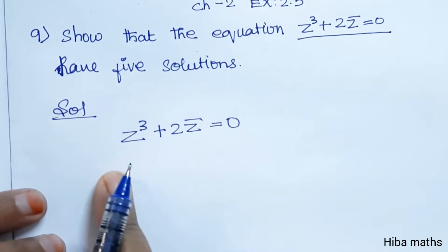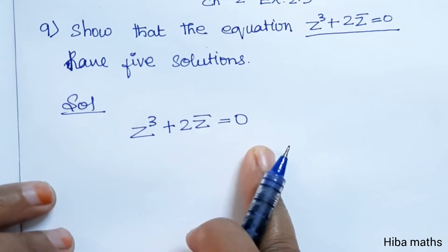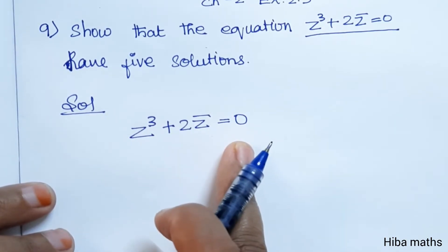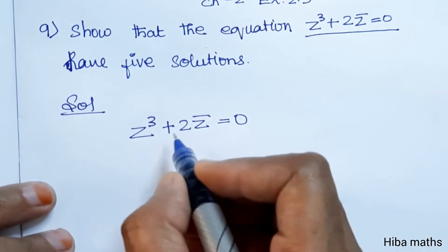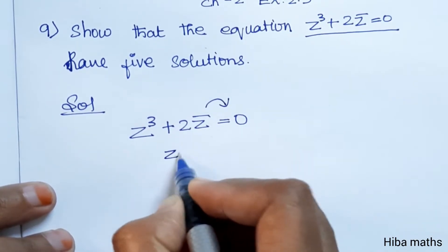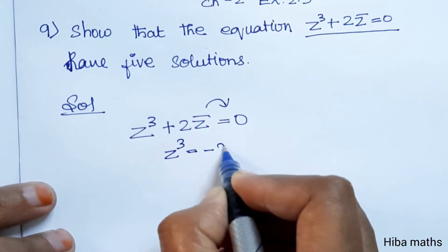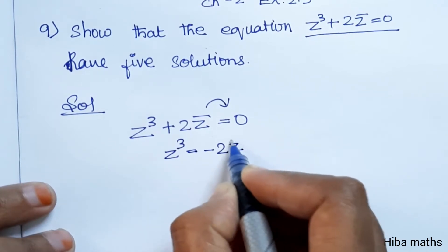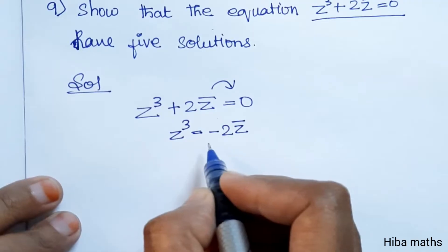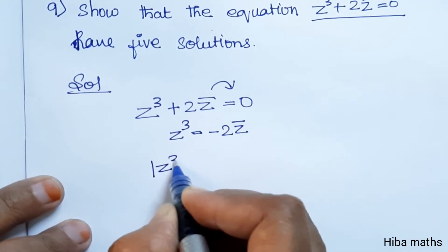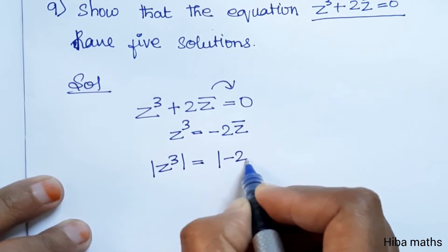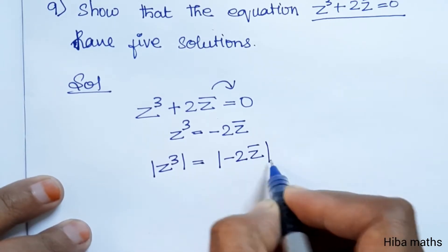We have the given equation Z³ + 2Z̄ = 0. Rearranging, Z³ = −2Z̄. At this step, we apply modulus to both sides: |Z³| = |−2Z̄|.